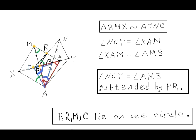So these two angles NCY and XAM are congruent. Angle XAM is congruent to angle AMB. This is because the transversal line AM crosses two parallel lines XA and MB. From this follows that angles NCY and AMB are congruent.